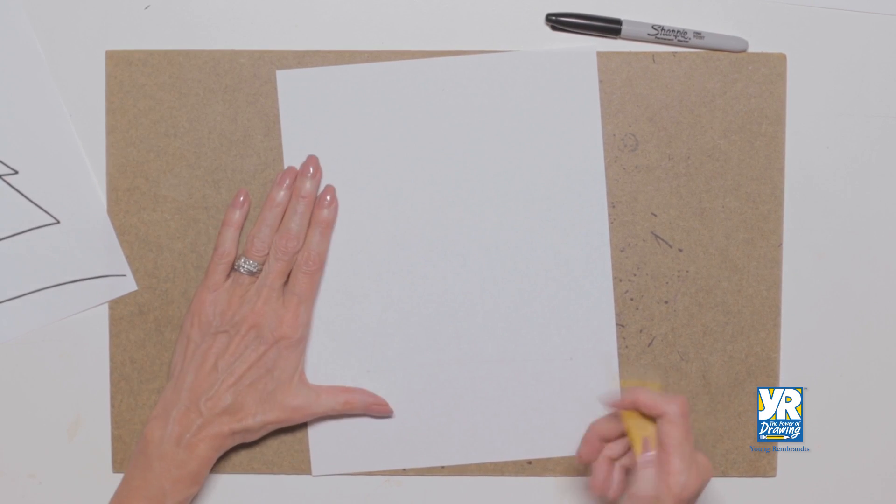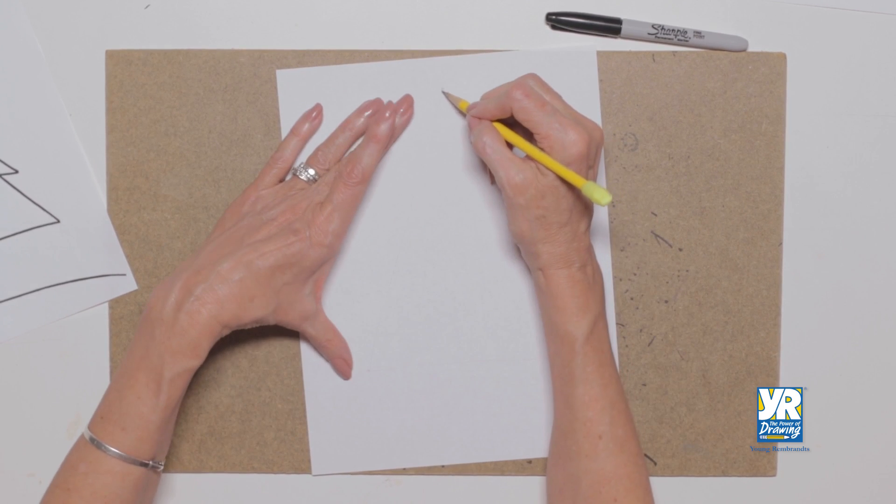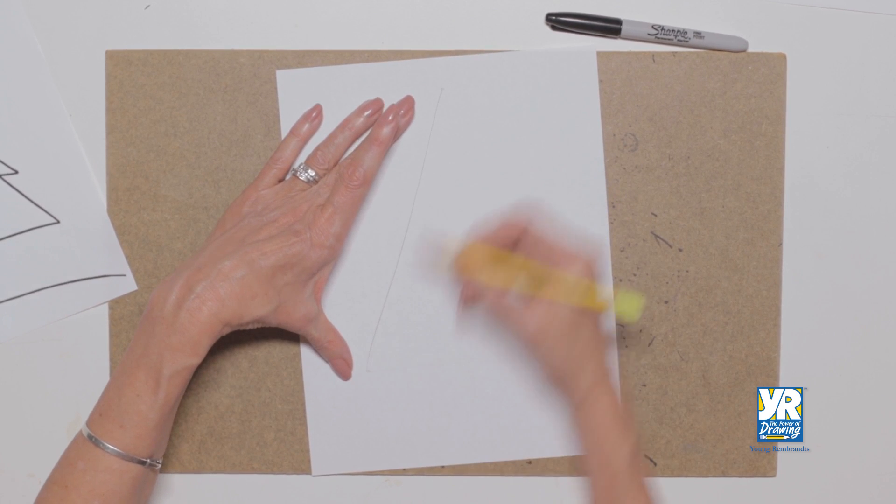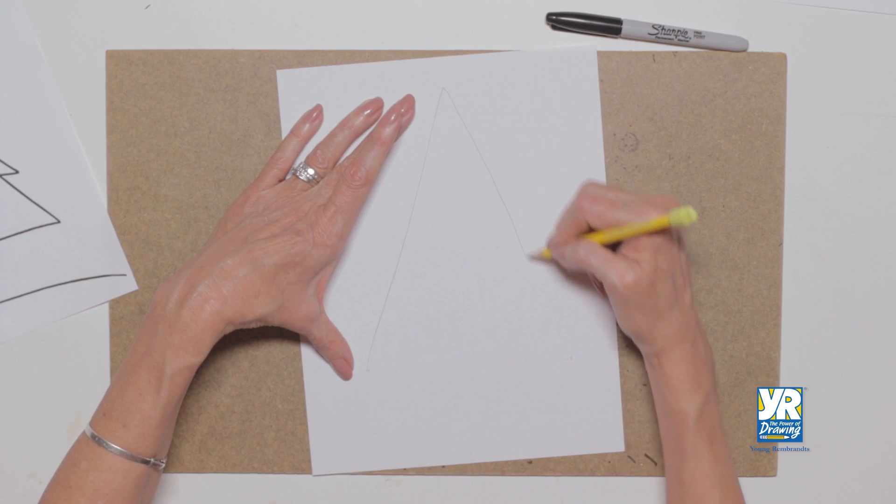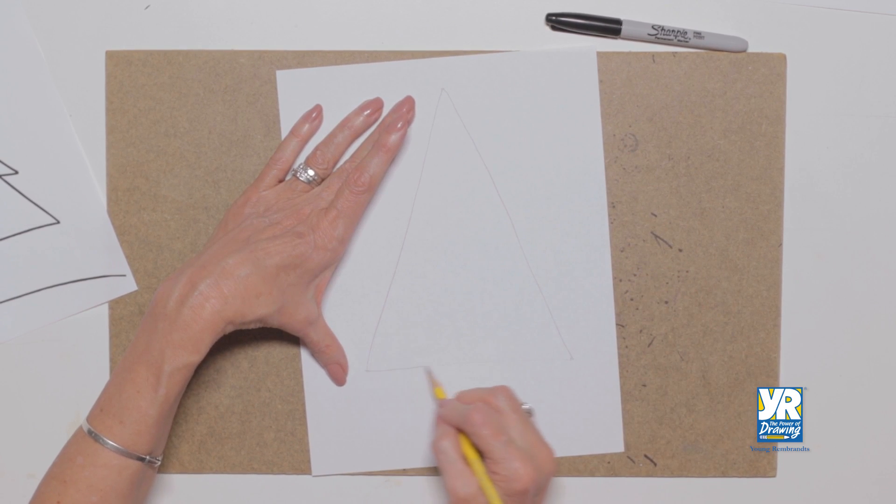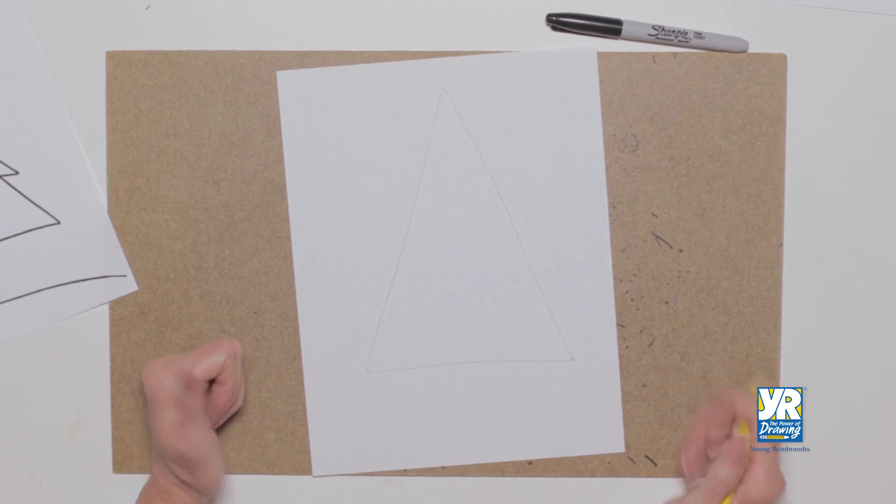The first thing I'm going to do is use a pencil and give myself a little triangle. I'm going to do it very lightly, but underneath before I put those zigzags on, I kind of want to know where my tree is.